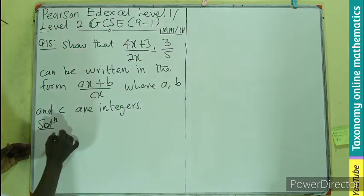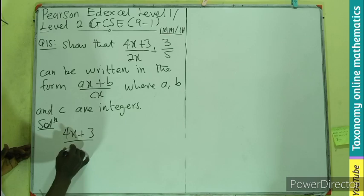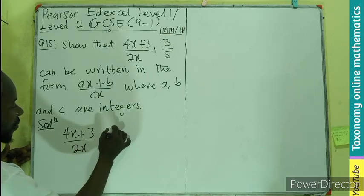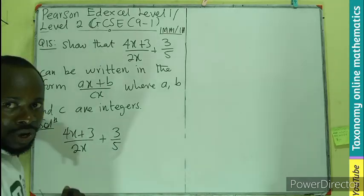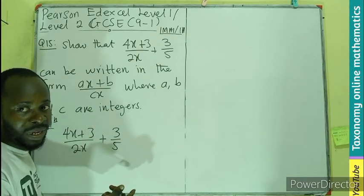So first thing first, we have our 4x plus 3 as numerator, 2x as denominator, second fraction 3 over 5. So in order to add these two fractions, we need to have a common denominator.